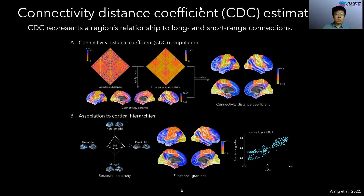We first defined the Connectivity Distance Coefficient, CDC, to represent each region's relationship to long and short range connections. We calculated Connectivity Distance by taking the average of geodesic distance within functionally connected regions. CDC is defined as the Pearson's correlation coefficient between a given region's functional connectivity and connectivity distance. In the CDC map, a region with a higher value means it is more related to the long-range connectivity subnetwork, while regions with negative values are more related to short-range connectivity. When stratifying the CDC to an atlas of functional zones, we found higher values in heteromodal networks and the lowest in idiotypic networks.